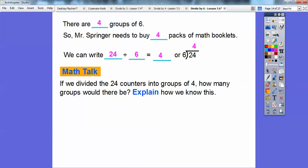If we divided the 24 counters into groups of four, how many groups would there be? Since we know that 24 divided by 6 equals 4, that means this number times this number equals this number.